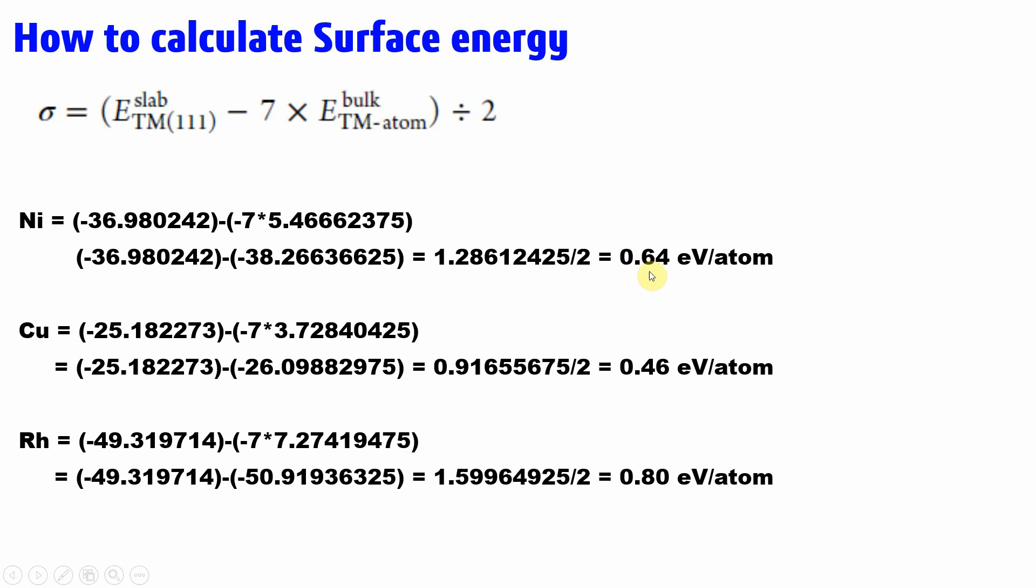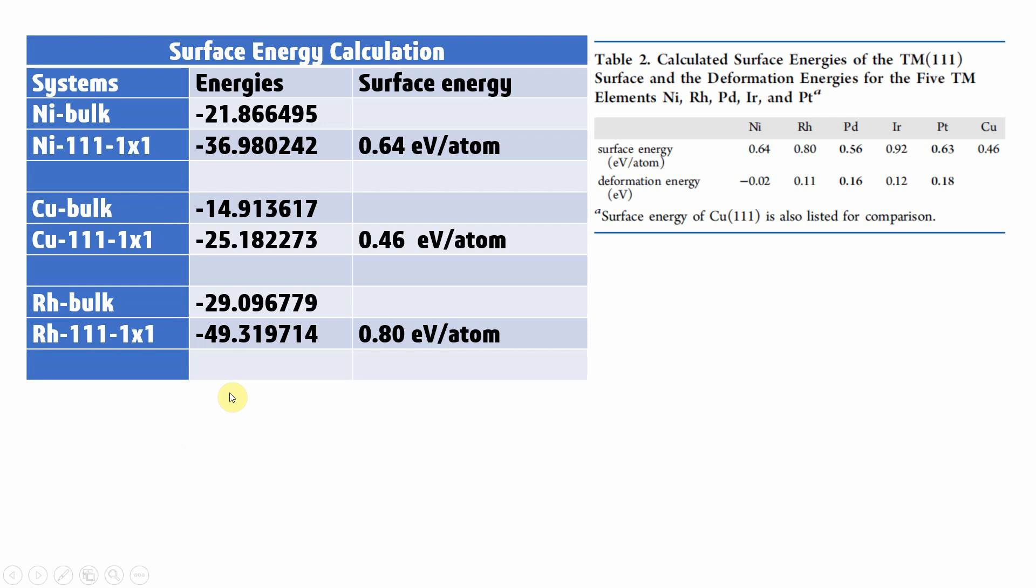Likewise you can also calculate copper and rhodium systems. I calculated myself the surface energy. This is the reported surface energy in the paper. For nickel I got 0.64, here also 0.64. Copper, 0.46, here also 0.46. Rhodium, 0.80, here also 0.80. So I have got the similar surface energy to what they calculated in their paper.